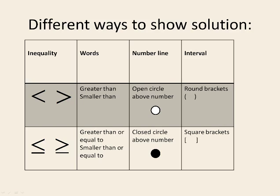Let's take a quick look at some of the ways that you can show a solution in an inequality question. If you are given the inequality symbols — the crocodile signs, the bigger than and less than — in words that is greater than or smaller than, and those things mean the same. On a number line, you would show something is just greater than or smaller than by using an open circle above the number. In interval notation, you would use round brackets.